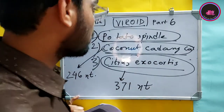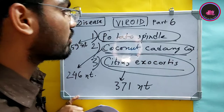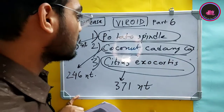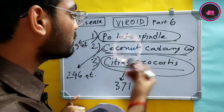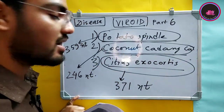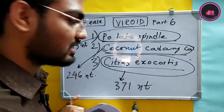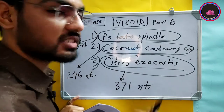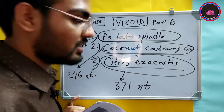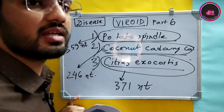The important points to remember: the smallest viroid is coconut cadang-cadang, and the viroid with the maximum genome size is citrus exocortis. This is asked in many competitive examinations.